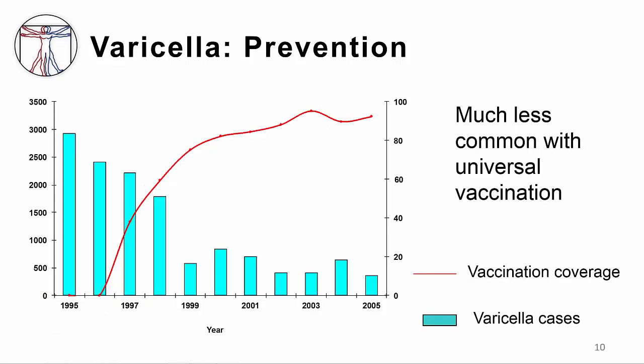This graph shows an example of how the VZV vaccine is impacting the number of cases of varicella we see. The red line represents the percent vaccine coverage and the blue bars are the varicella cases. Overall, there has been more than an 80 percent decline in VZV cases, greater than a 95 percent decline in hospitalizations, and a similar decline in deaths due to VZV.